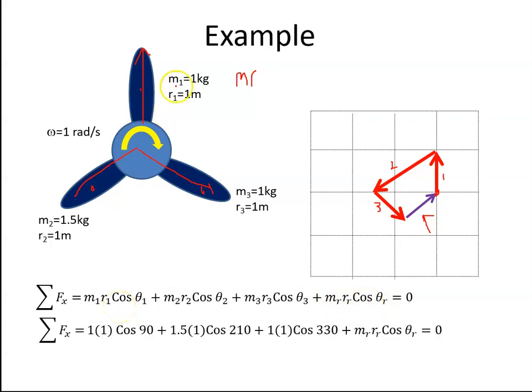So when I put in the values, so this is 1 kilogram by 1 meter, and the angle, so we said in the introductory video we measure all the angles from this position. So that's 90 degrees. So cos θ1 is 90 degrees. θ2, again we're measuring from this angle, so it's that angle there. So that is 90 plus 120, which is 210. So θ2 is 210, it's 1.5 kilograms and it's 1 meter, so that's cos 210.